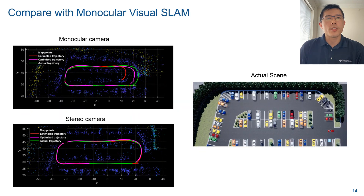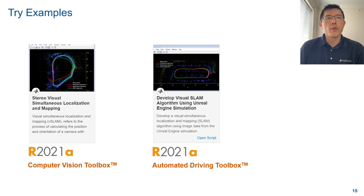Compared with Monocular Visual SLAM, Stereo Visual SLAM produces more accurate results. This is because the stereo camera provides extra depth information and avoids the scale drift problem in Monocular Visual SLAM. If you would like to know more about Visual SLAM using a stereo camera, please visit our documentation and try the examples.